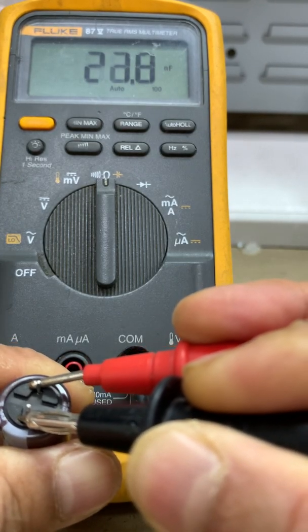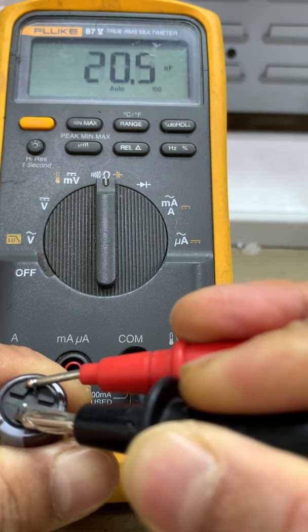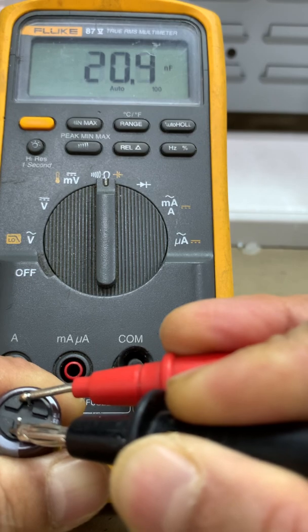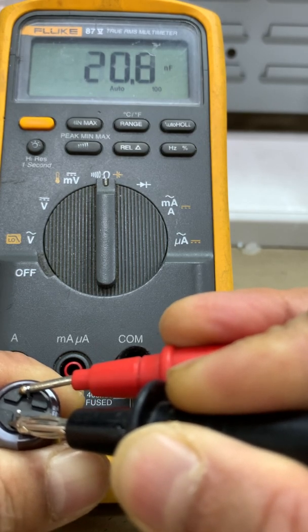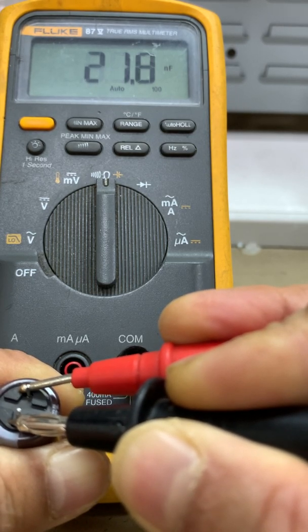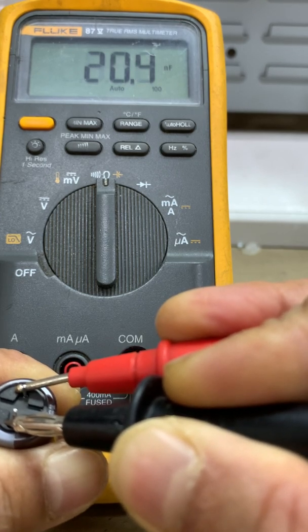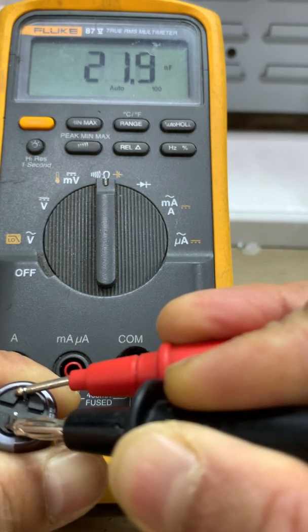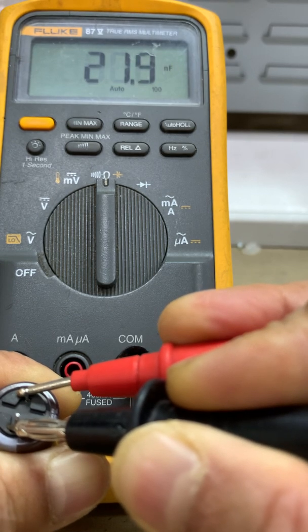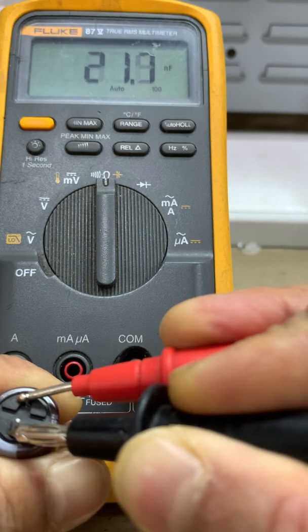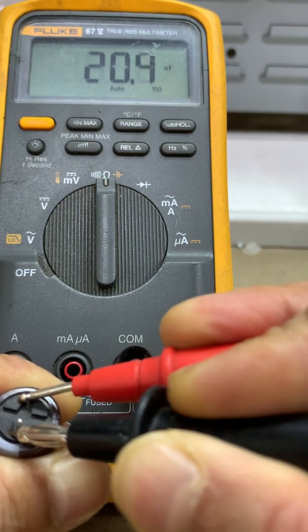The reading is 20 and there is variation. Instead of microfarad, the reading is in nanofarad. Take note that for electrolytic capacitors, the reading should be in microfarad. So this is leaky because it's not reading in microfarad, it's in nanofarad. It means the capacitance value is changing or declining.